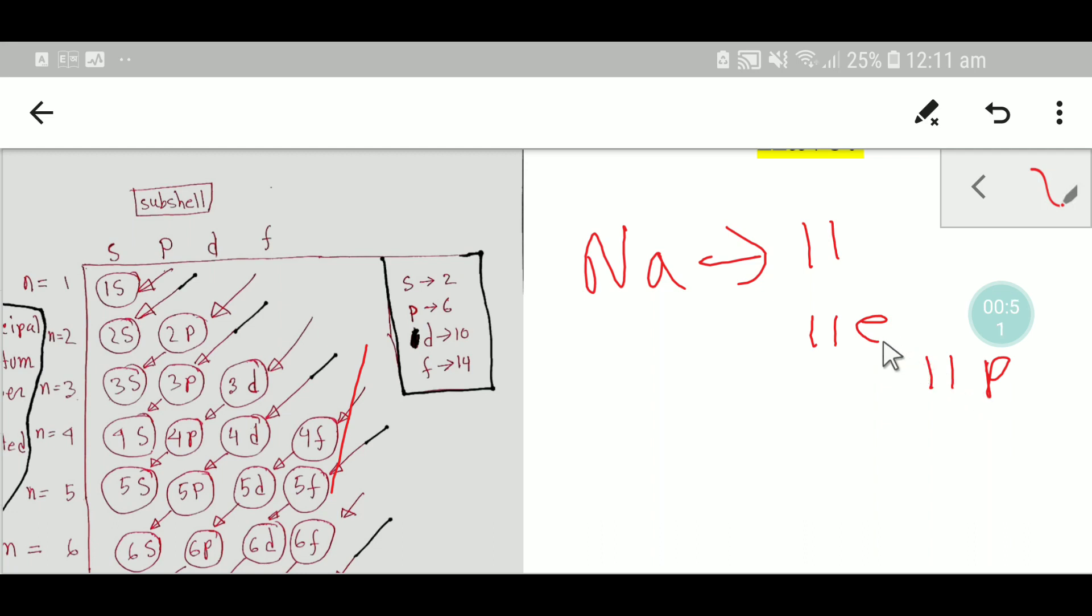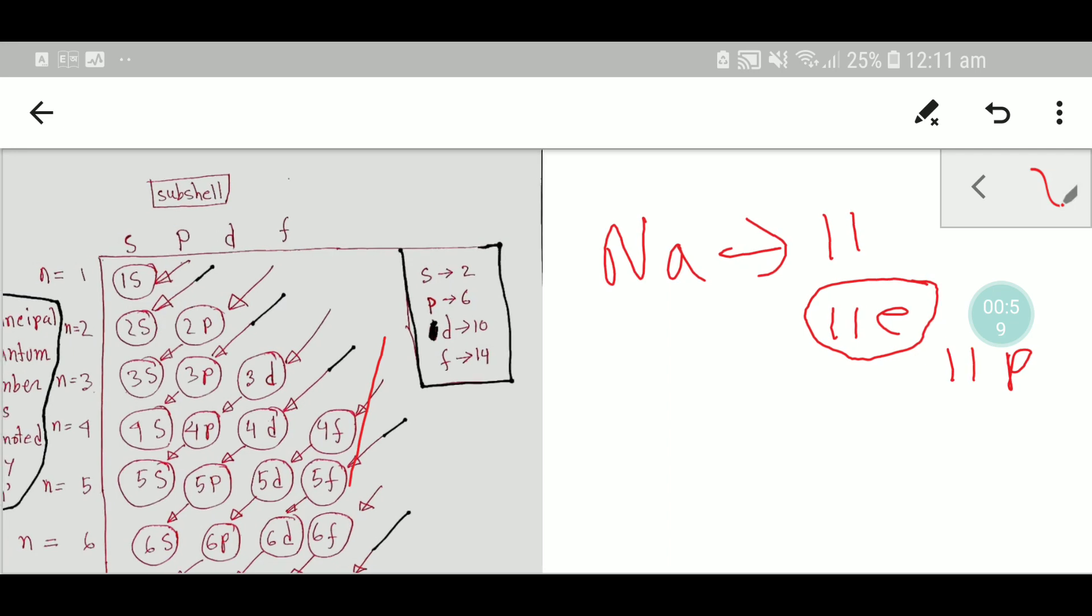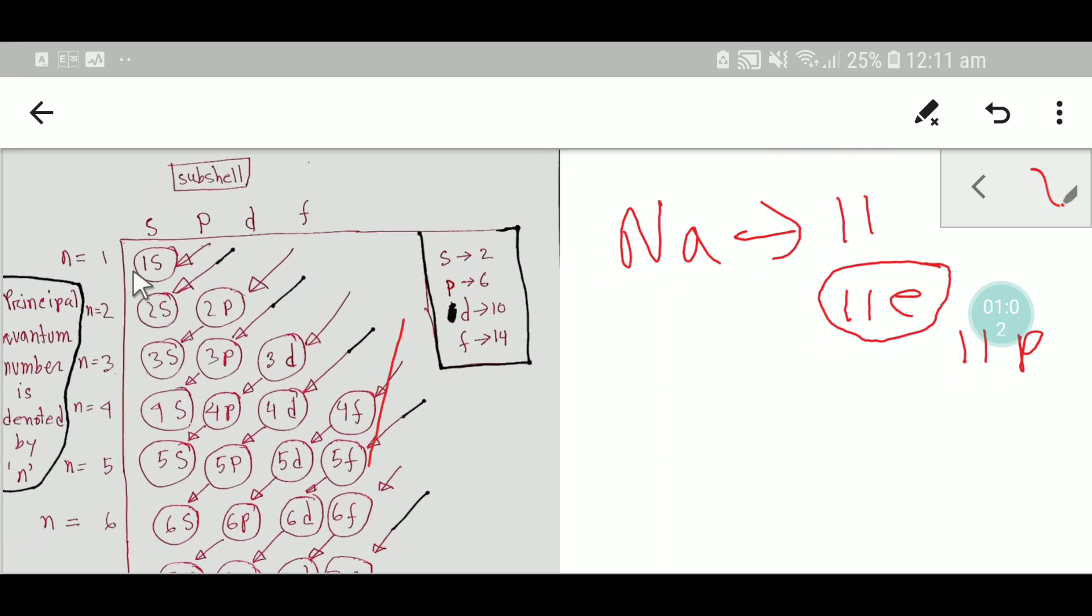So we have 11 electrons. By using this diagram, we can do the electronic configuration of sodium. You know that the s subshell can take a maximum of two electrons and has only one orbital.